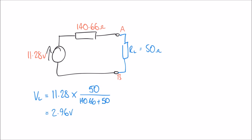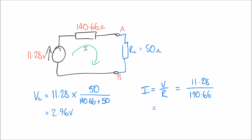Next we can work out the current in this circuit. Because it's now a complete circuit, there's going to be a current I flowing around it, and we can calculate I using Ohm's law: I equals V over R. The voltage is 11.28 volts. I have two resistors in this circuit so I must use the total resistance: 140.66 plus 50 gives a total resistance of 190.66 ohms. That gives me a supply current of 59.16 times 10 to the minus 3, or 59.16 milliamps.